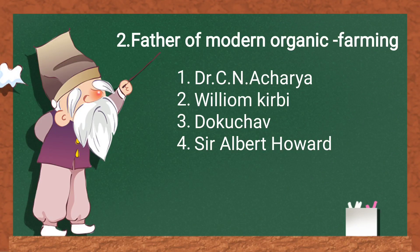Father of modern organic farming: options are Dr. C.N. Acharya, William Kirby, Dokuchow, and Sir Albert Howard. The answer is Sir Albert Howard. C.N. Acharya is related to the Bangalore method of composting. William Kirby is the father of entomology. Dokuchow is the father of soil science.